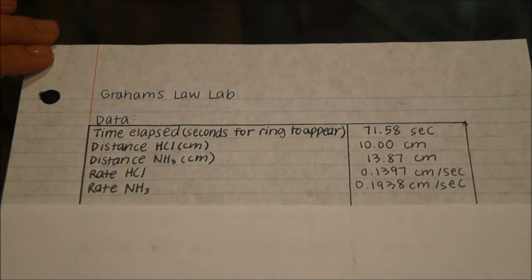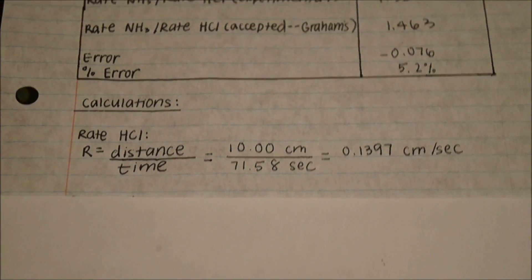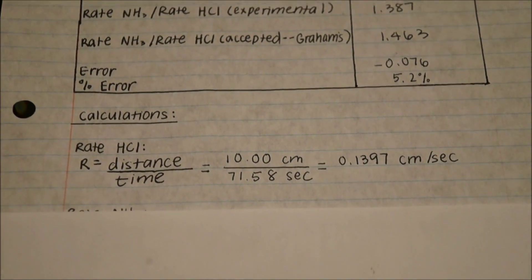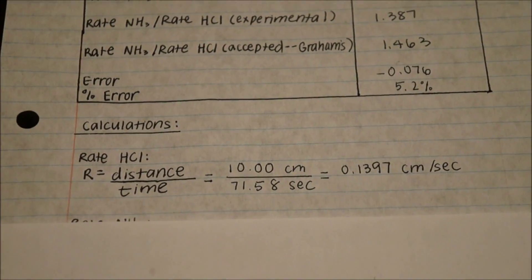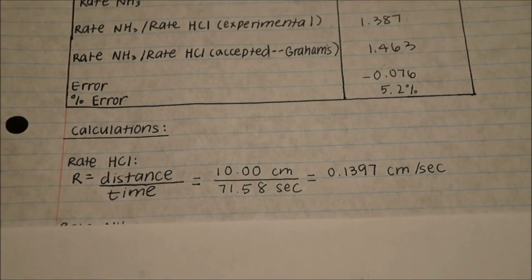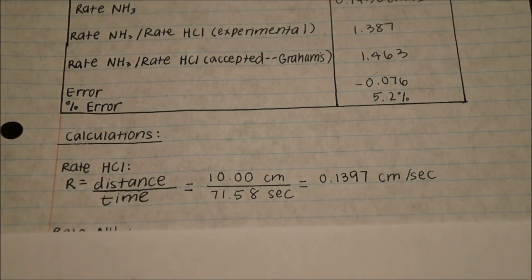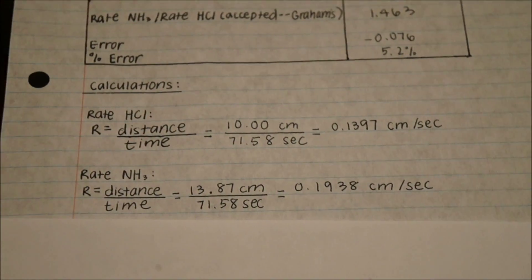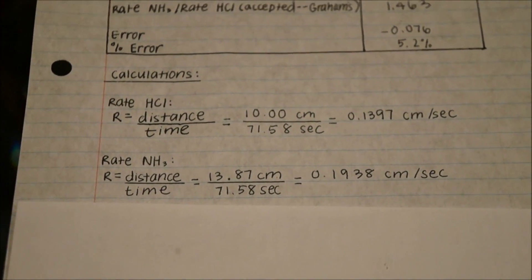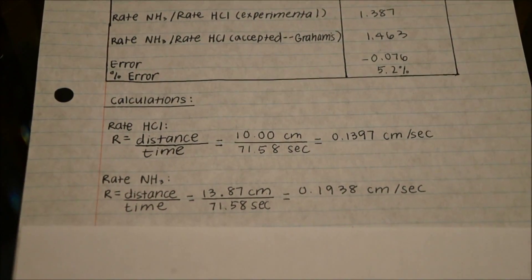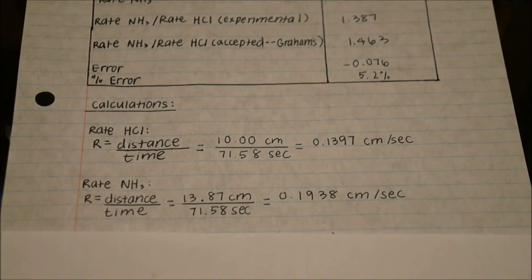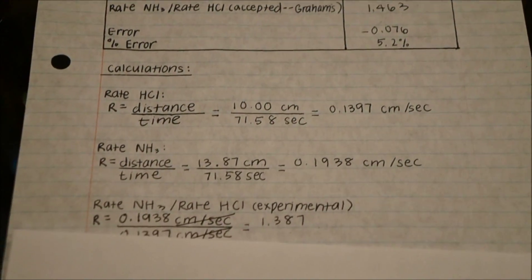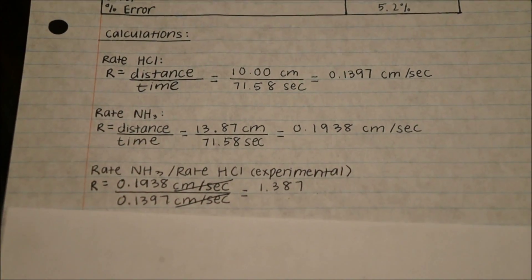Now let's calculate the rate of hydrochloric acid and ammonia. To find the rate, we use the equation rate equals distance over time, which is 10.00 centimeters over 71.58 seconds, giving 0.1397 centimeters per second for the rate of hydrochloric acid. We repeated the same process for ammonia. The rate of NH3 over the rate of hydrochloric acid is 1.387.